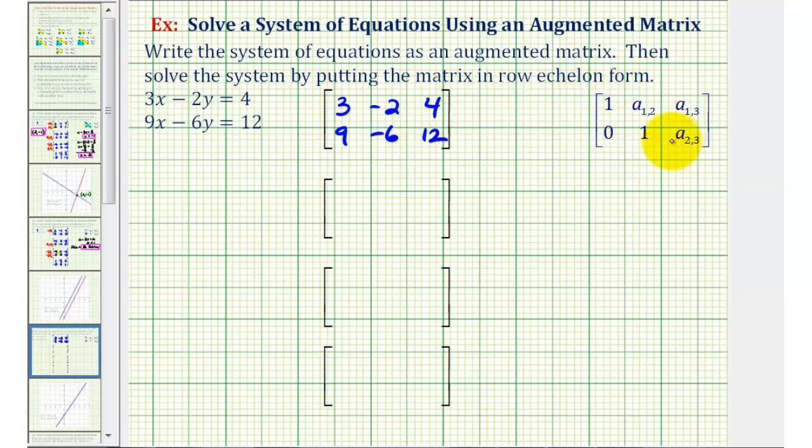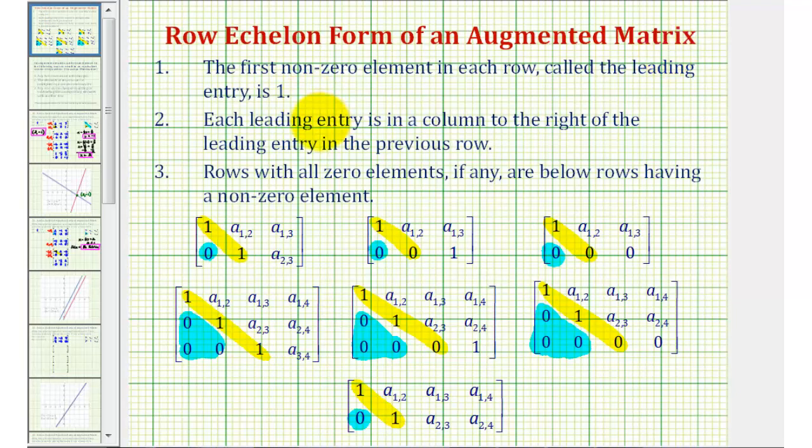Let's review specifically what row echelon form is. An augmented matrix is in row echelon form when the first non-zero elements in each row, called the leading entry, is 1. We have several examples here below.